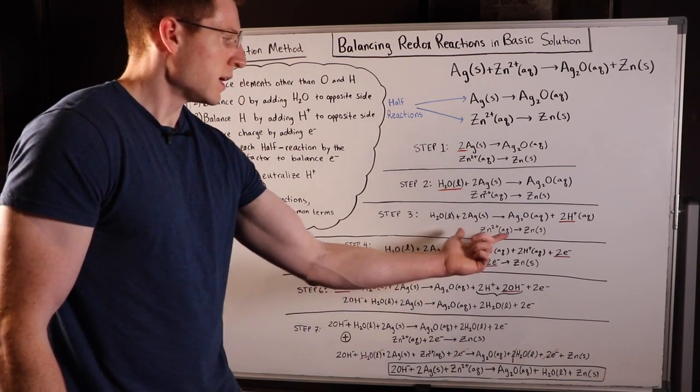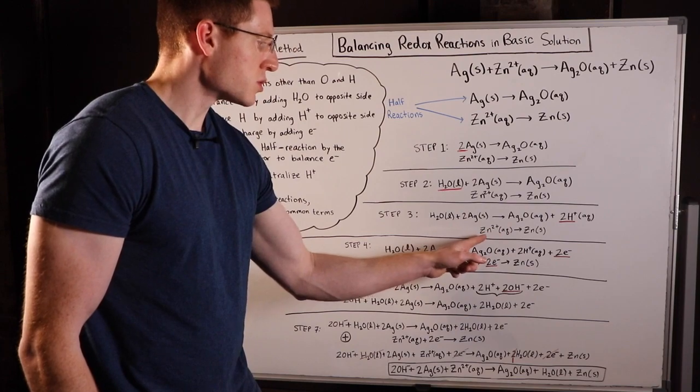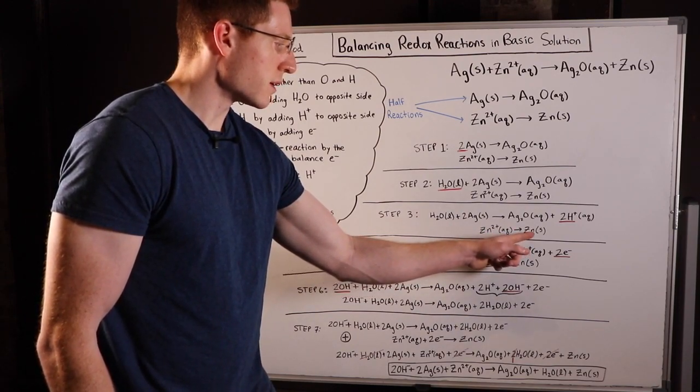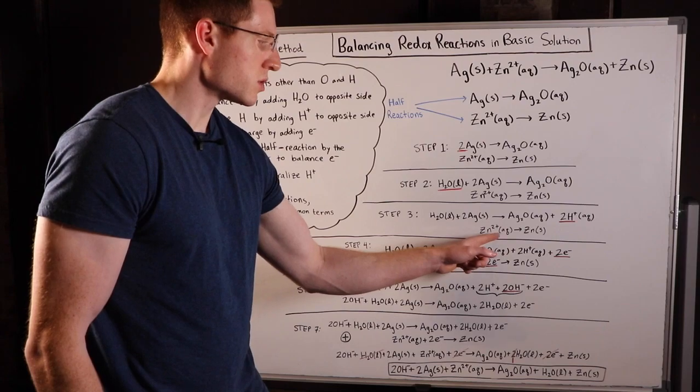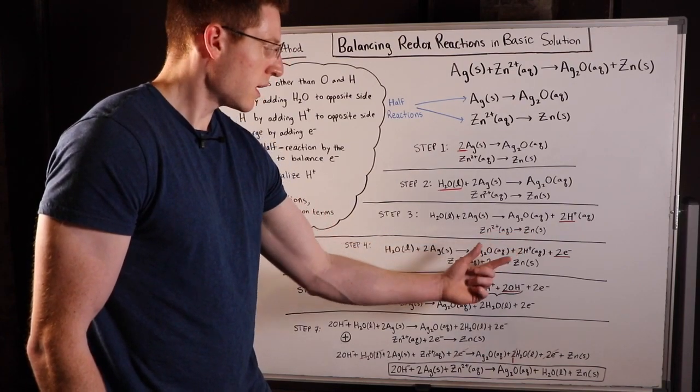In the second equation I've got a plus two charge on the reactant side and a zero charge over here, so in order to neutralize this plus two charge to make it neutral like the products, I'm going to add two electrons to the reactant side here. Step four is done.